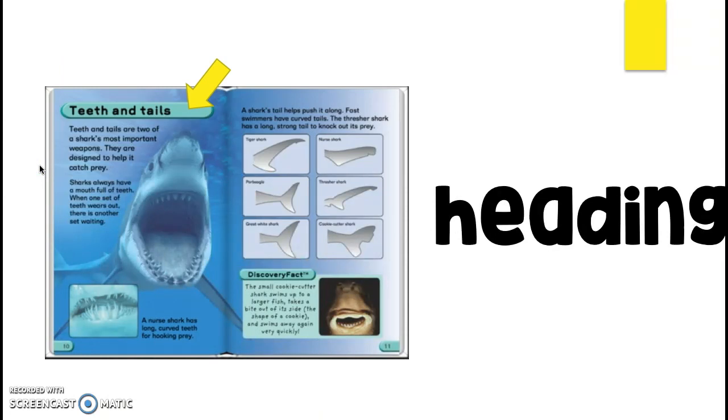Another text feature that tells the reader information is the heading. Headings are normally found above paragraphs or pages, and it gives the reader a clue as to what the author will be talking about in that section. A heading on this page is entitled teeth and tails. So what do you think we're going to learn about on these next few pages? Yeah, we're probably going to learn about teeth and tails. See, headings are really good because they help the reader understand what they're about to read. And then you can get your good brain ready to start thinking, hmm, what do I know about teeth? And what do I know about tails? And then you'll know how to organize that information in your brain once you've learned it.